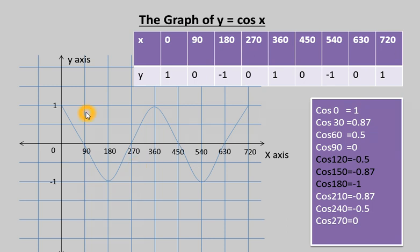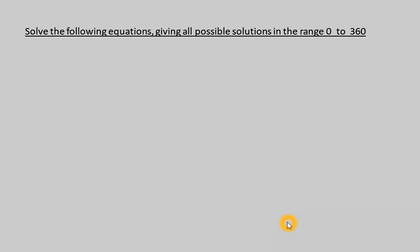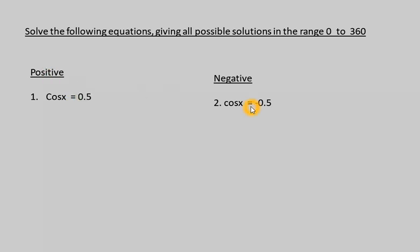The greatest value of cosine is 1 and the lowest value is -1, so all values of cos x lie between -1 and 1. Next, we solve cosine equations to find values of x between 0° and 360°. We have two questions: cos x = 0.5 (positive case) and cos x = -0.5 (negative case). Each will give two solutions, and we handle them differently.